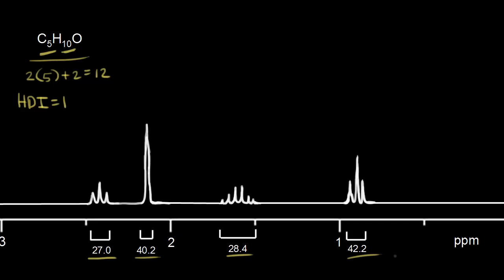Remember, you divide all four integration values by the lowest one, which is 27. So 27 divided by 27 is 1. 40.2 divided by 27 is pretty close to 1.5. 28.4 divided by 27 is close to 1, and 42.2 divided by 27 is again close to 1.5.